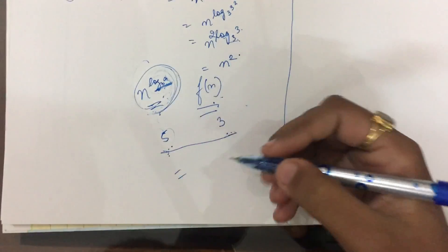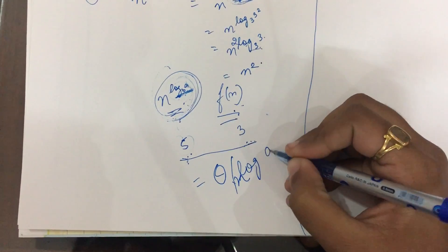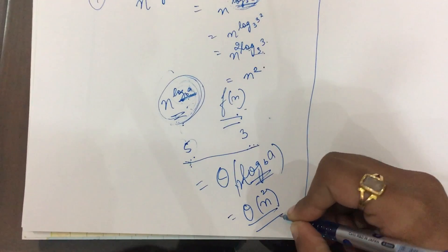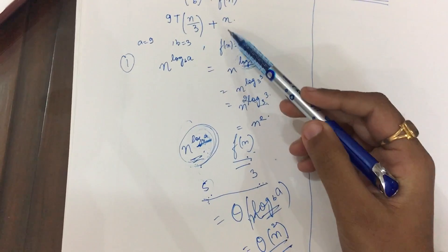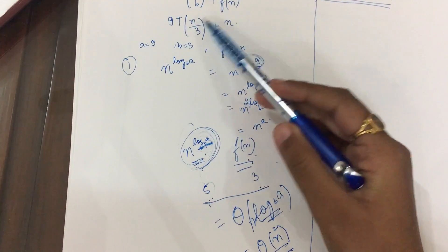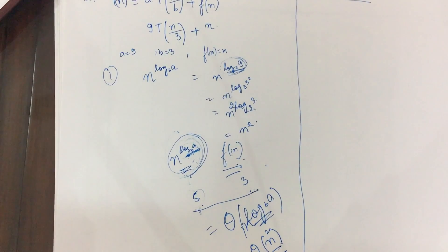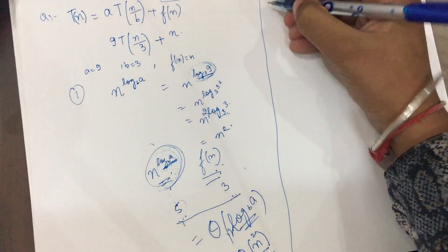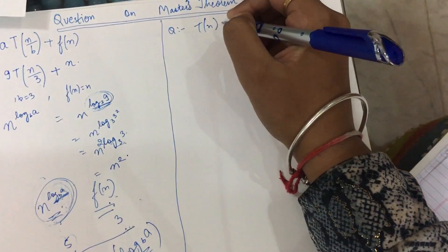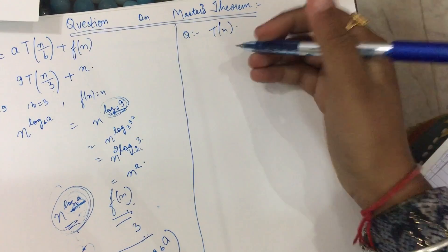By Rule Number 1, the complexity is equal to θ(n^(log_b a)), which is θ(n²). That is how you find out the complexity given f(n) and the recurrence equation with the constant terms. Now we'll solve one more question. Take out a copy and pen and solve simultaneously, since you've seen one example it will be easy for you now.